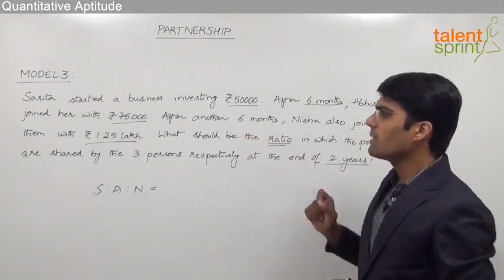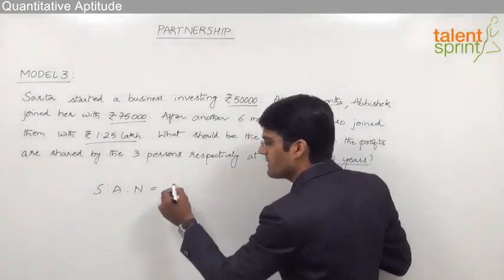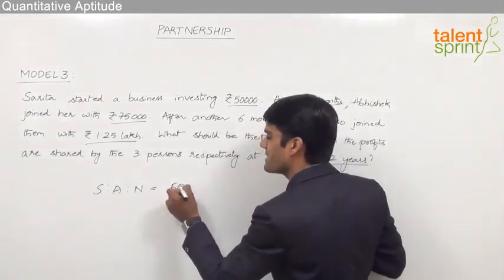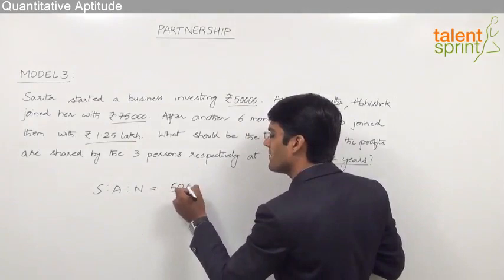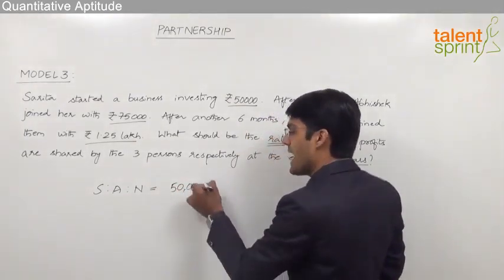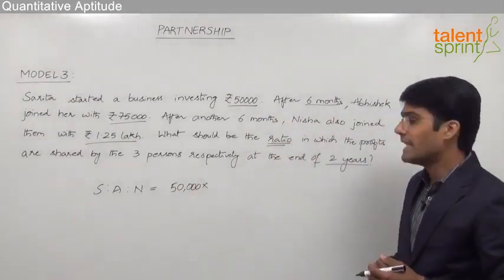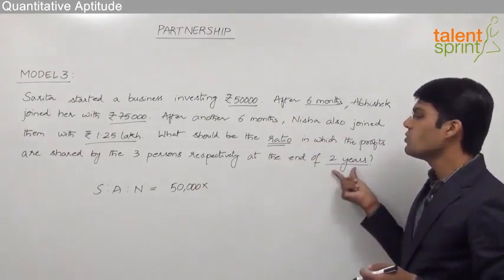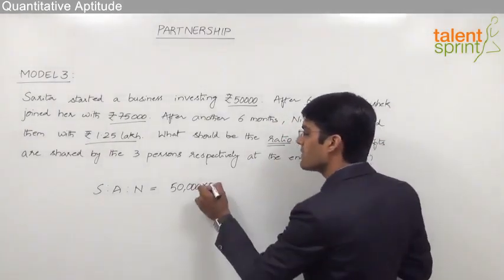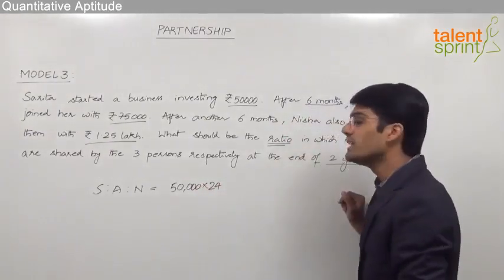From the given question, Sarita started the business with 50,000. So the investment made by Sarita is 50,000 and she was there in the business for the total period — that is nothing but 2 years. So we can say that Sarita was present for 24 months.